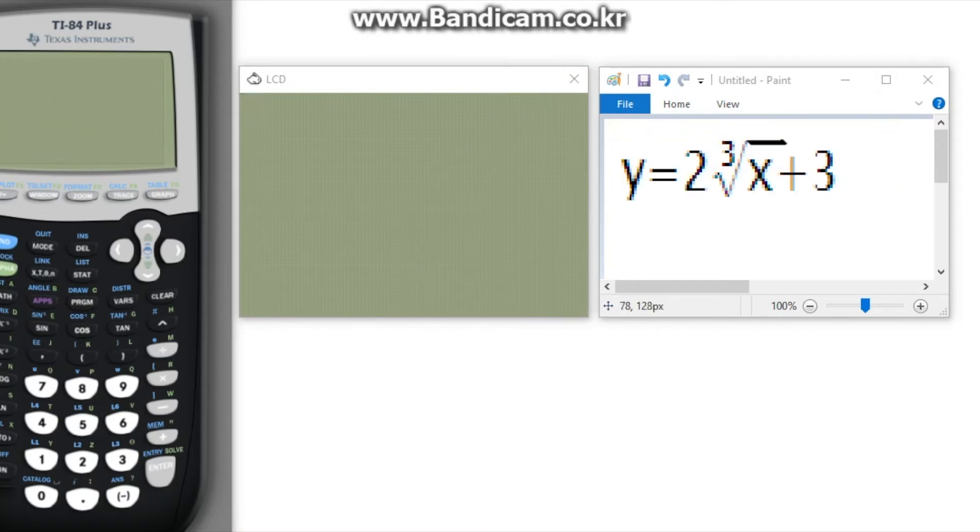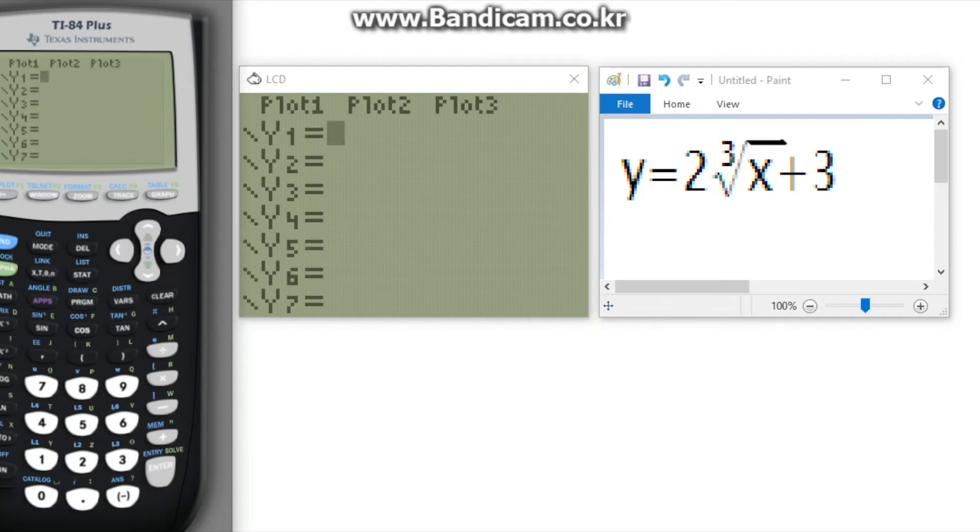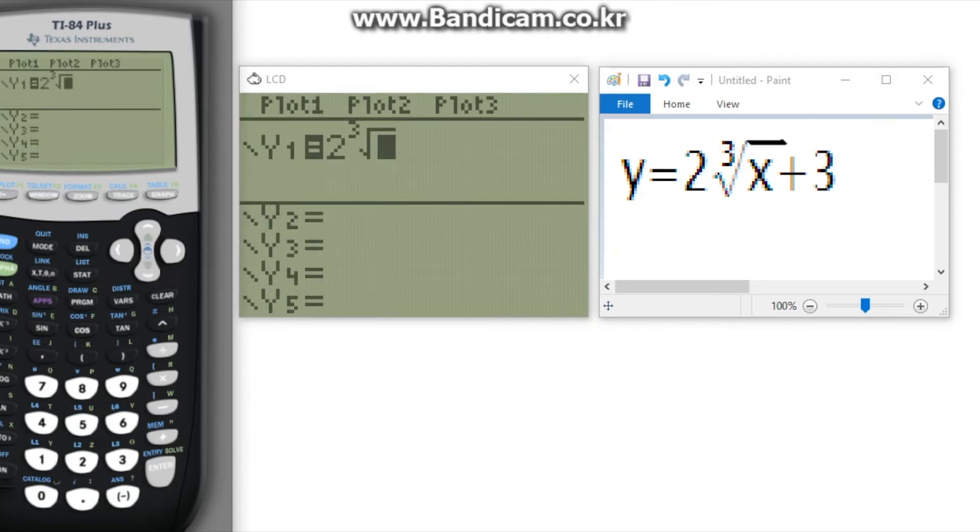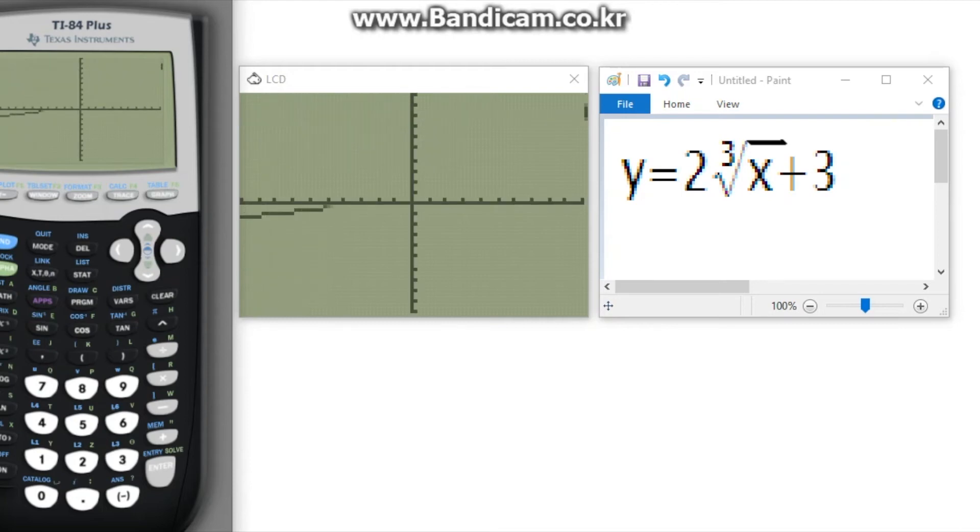Finally, for our fourth and final example, we will be finding the zero of the equation y is equal to 2 times x to the third root plus 3. Like all the other examples, we will be putting the equation into the calculator and graphing it first.